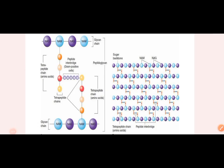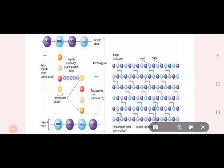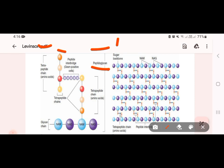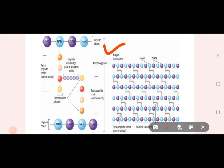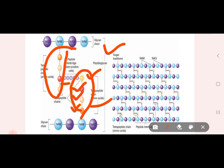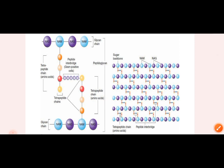The cell wall is composed of a peptidoglycan chain. The glycan chain has two molecules: NAG (N-acetylglucosamine) and NAM (N-acetylmuramic acid). The peptidoglycan chain has 4 amino acids — a tetrapeptide — linked to this glycan chain. Between two glycan chains, one tetrapeptide is on one side and the other tetrapeptide is on the other side.